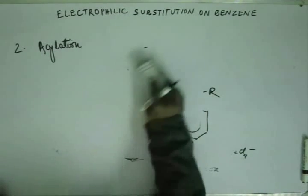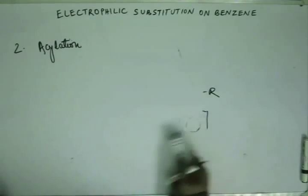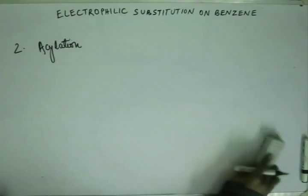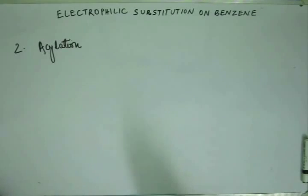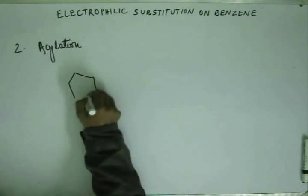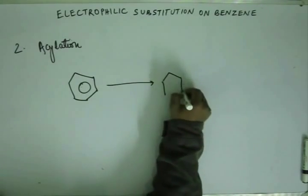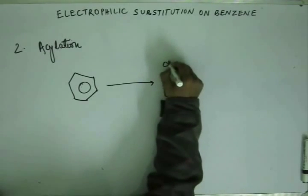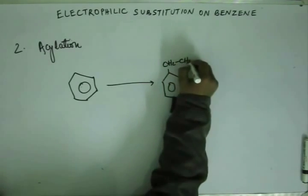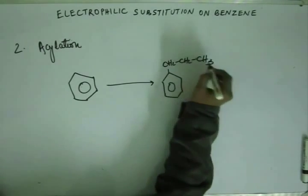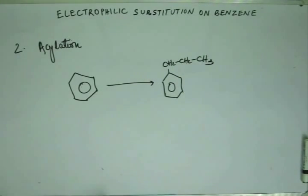IIT JEE once asked a problem in the mains paper: they asked you to produce normal propyl benzene from benzene. Based on the two reactions discussed, you have to think about how to get normal propyl benzene from benzene.